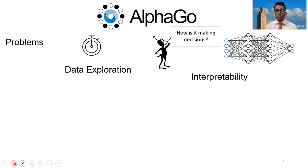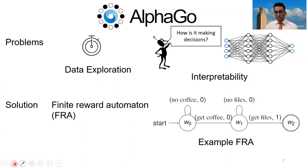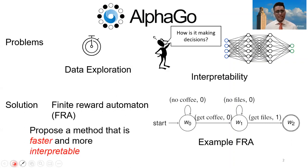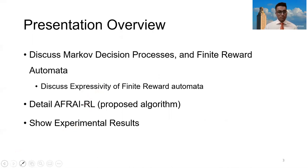Towards both these ends, we propose a solution using finite reward automatons. What we will show in this paper is that by using finite reward automatons and our new method, you can get a reinforcement learning algorithm that is faster and more interpretable than common baseline algorithms today. We'll start by discussing Markov decision processes and finite reward automatons, then discuss how they can express a variety of reward functions, then go into our algorithm, and finally conclude with our experimental results.